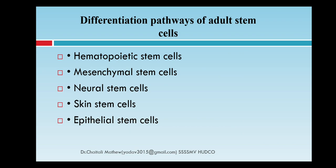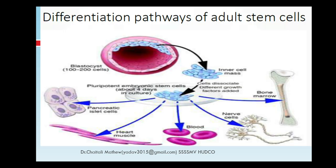The grown cells are called embryonic stem cells. There is also a differentiation pathway for adult stem cells — they can develop into hematopoietic stem cells, mesenchymal stem cells, neural stem cells, skin stem cells, and epithelial stem cells. As we can see, adult stem cells can be differentiated into many types of stem cells.